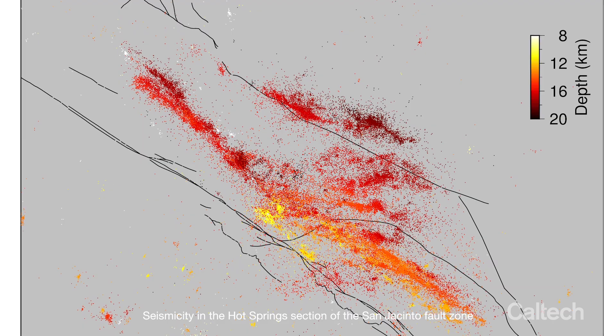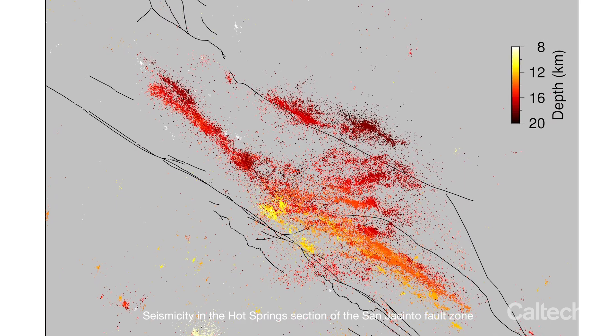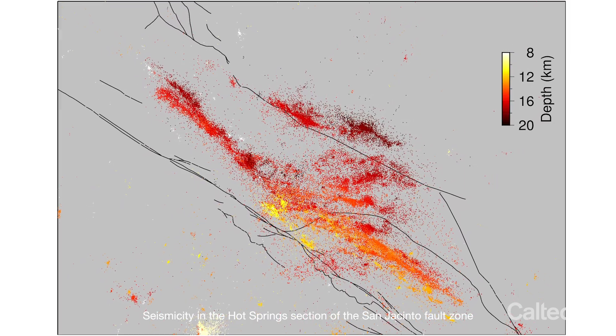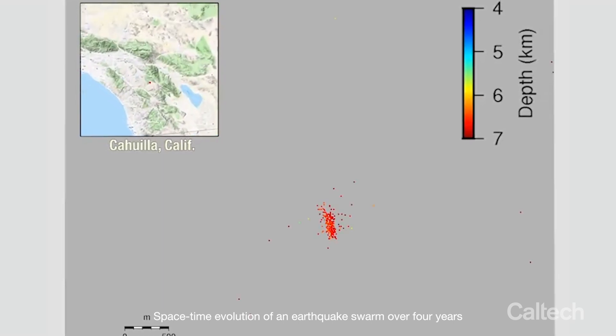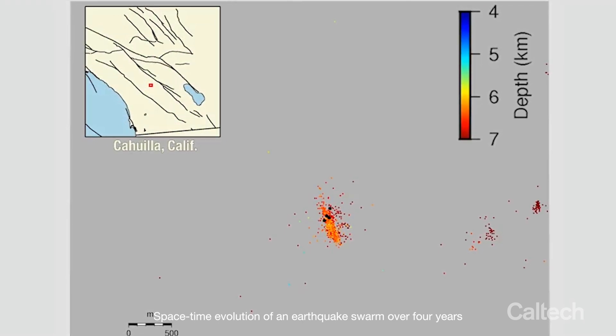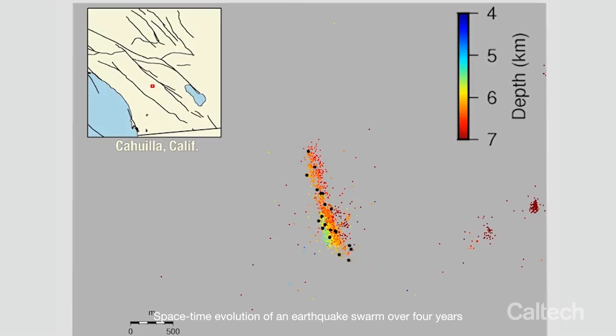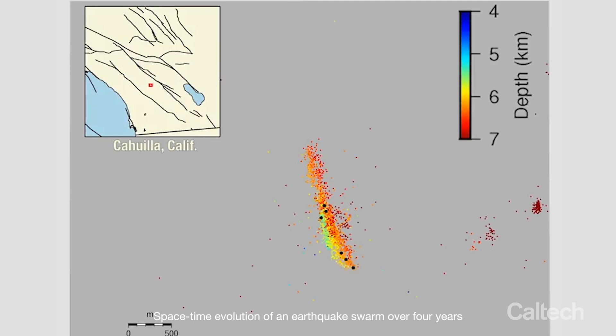There have been several different things that have come out in the last few years from our research using these types of technologies. One of them is that a lot of the seismicity we see in Southern California — which means the daily counts of earthquakes happening in some of the most active regions — are turning out to be from different processes than we originally attributed them to. For example, in the southernmost part of the state, there has been a lot of seismic activity known about for at least a hundred years.